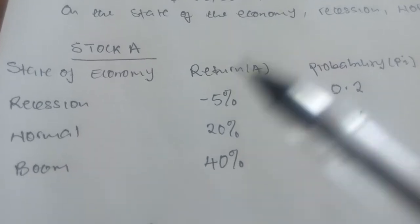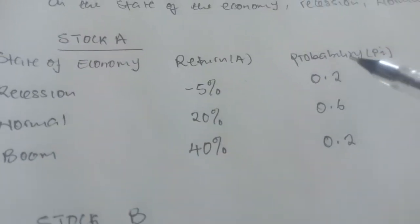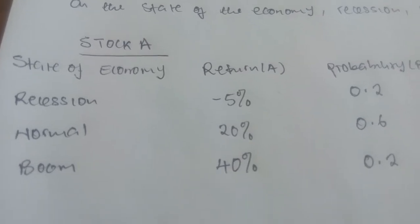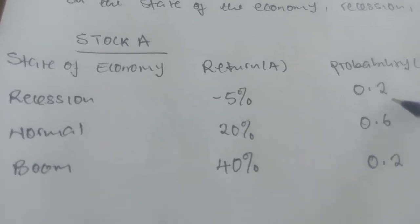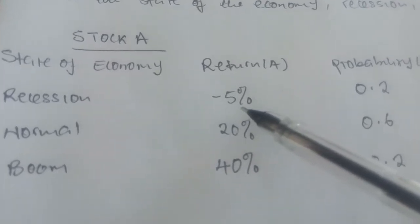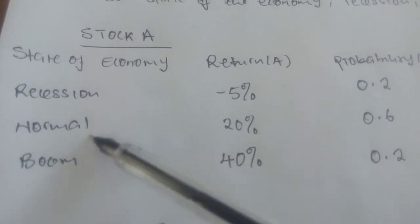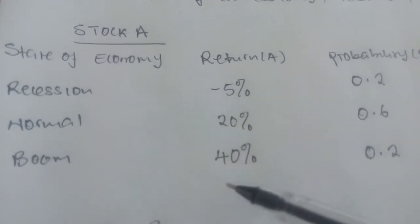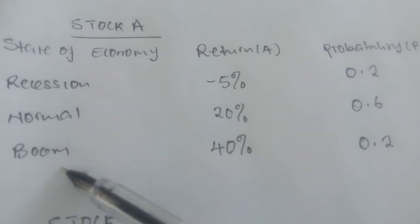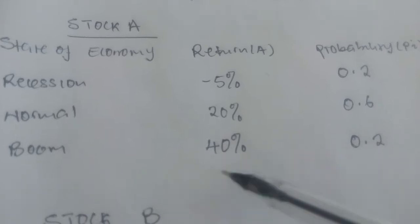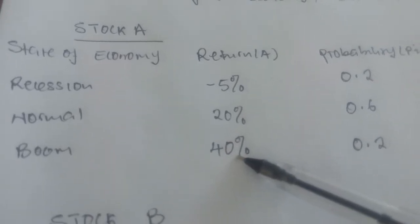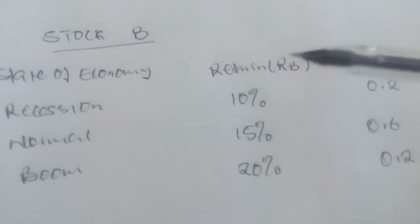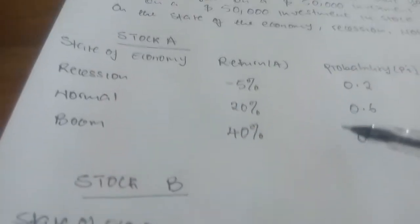We have stock A here with the given states of the economy and the possible returns we can generate, along with the probabilities. Looking at recession, we have 20% or 0.2 probability of realizing a return of negative 5%. Under normal economy, there's 60% or 0.6 probability of generating 20% in returns. In boom, there's 20% or 0.2 probability of getting 40% in returns. The same explanation applies to stock B with its probabilities, states, and returns.